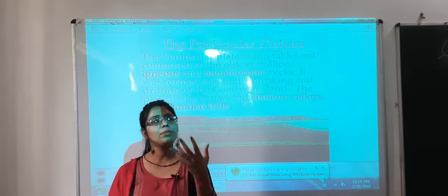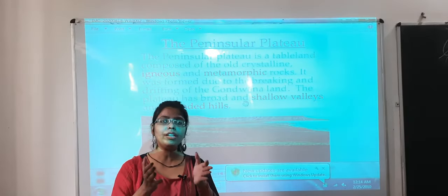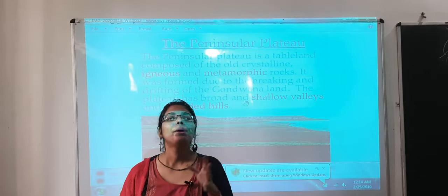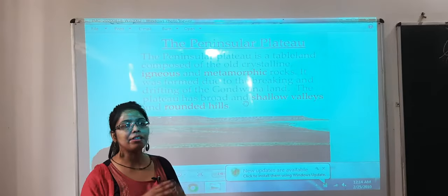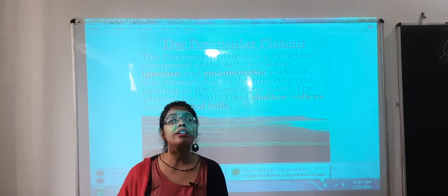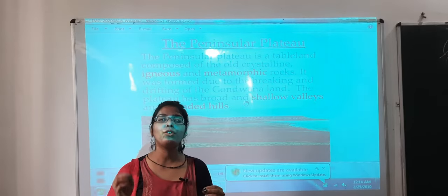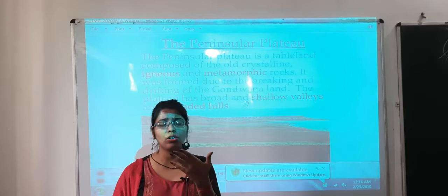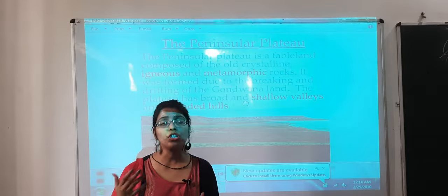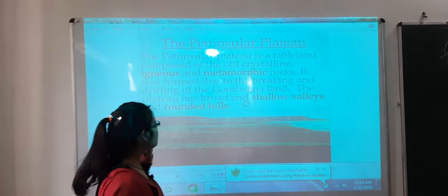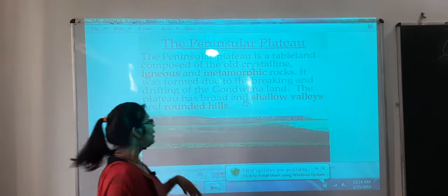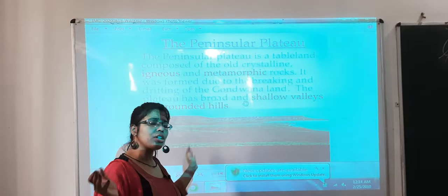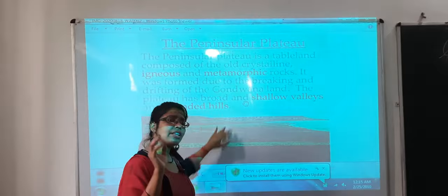We need to understand what is peninsular and what is plateau, then we will combine them. Peninsular means any landmass which is covered by water from three sides. If you open your books and go through the map in the chapter on physical geography features of India, you will find that the landmass is covered from three sides — Arabian Sea, Bay of Bengal, and Indian Ocean — and it is known as a peninsular region.